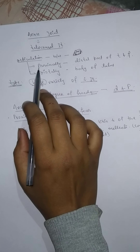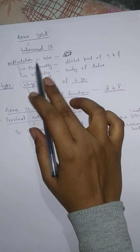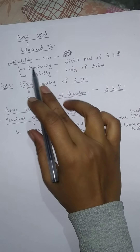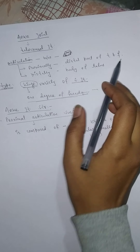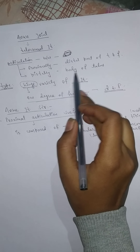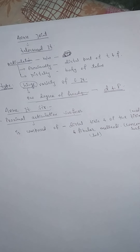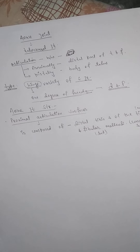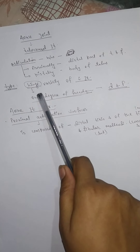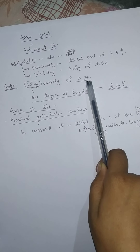The ankle joint is the articulation between the proximal areas formed by the distal part of the tibia and fibula, which are the proximal parts of the articulation, and distally the articulation is the body of talus. So the body of talus and the distal part of the tibia and fibula form the talocrural joint. The type is a hinge variety of synovial joint.